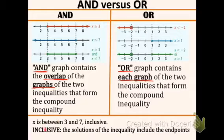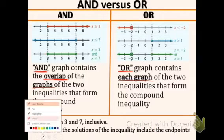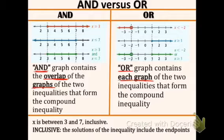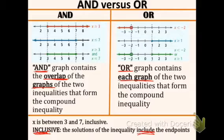Here we have 'X is between three and seven inclusive.' We need to figure out what the word inclusive means. Inclusive means that the solutions of the inequality include the endpoints — the major word there is 'include.' You can see that 'include' is actually in the word 'inclusive.' The solutions include the endpoints, wherever the inequality starts and ends.